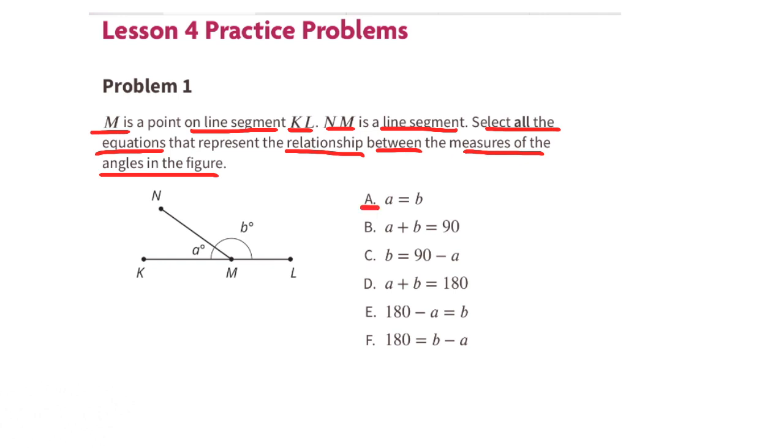A. A equals B. Angle A is much shorter than angle B, so it's obvious that angle A does not equal angle B. B. A plus B equals 90. Angle A plus angle B equals 180 degrees, so angle A plus angle B does not equal 90.